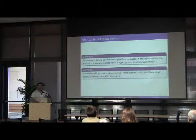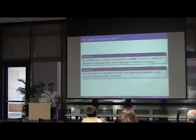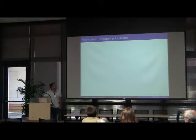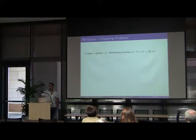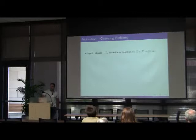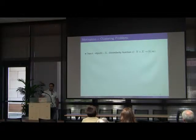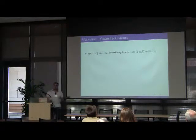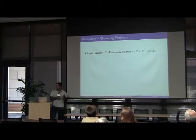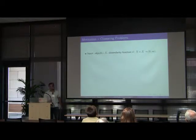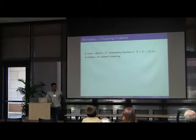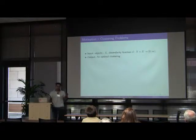There are many reasons to study stable instances. Maybe the most convincing one is clustering problems. We will consider clustering problems of the following kind. The input is a set of objects, which we denote by x, and a dissimilarity function d, such that d of xy is the dissimilarity between the object x and the object y. We do not assume that d is a metric or any other restriction on d. The output is an optimal clustering in some sense when a clustering is considered good if similar objects or closed objects are classified into the same cluster.